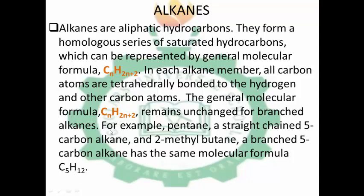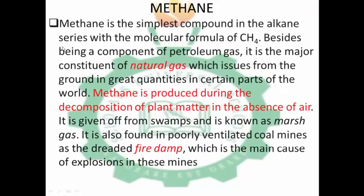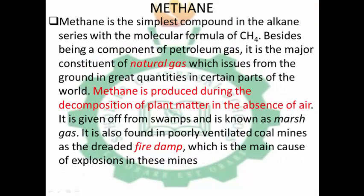But if you look at their structures, their structures are different, even though their molecular formulas are the same. So let's look at the first member, methane. Methane is the simplest compound in the alkanes series with its molecular formula CH4. Besides being a component of petroleum gas, it is the major constituent of natural gas, which is obtained from the ground in great quantities in certain parts of the world.